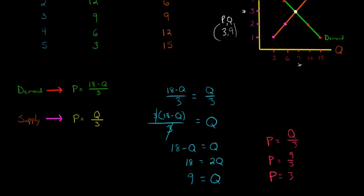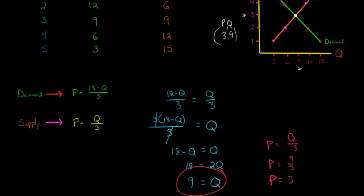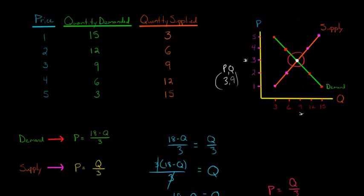So we see that at our equilibrium, which is where our demand equals supply, we just set the equations equal to each other and solve for Q. And then we just plug Q back in. So now we see that we have an equilibrium price of $3 and an equilibrium quantity of 9. And that matches up exactly with what we found in our graph here, where we have an equilibrium price of $3 and then an equilibrium quantity of 9.